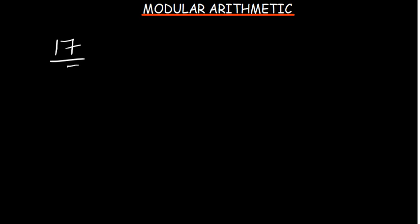In this tutorial we're going to go over modular arithmetic and understand basically how it works. Given a number, let's say 17 divided by 5, you understand that if you divide 5 into 17 that's like three times and you have a remainder of 2. So this is what we're going to start from and build from.